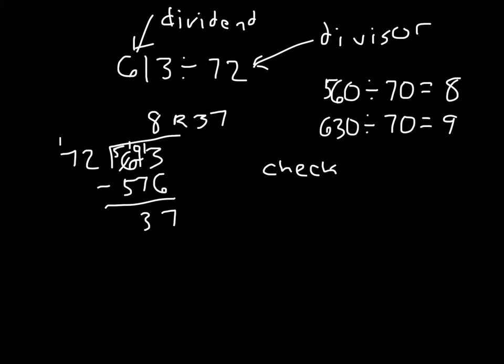Here is our check. We take our divisor, which was 72. Multiply it by our answer, which was 8. 8 times 2 is 16. 6, regroup the 1. 8 times 7 is 56, plus 1 is 57. And then we'll add back in our remainder.